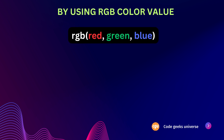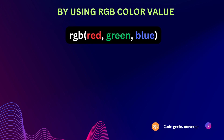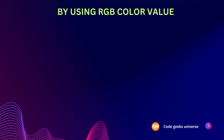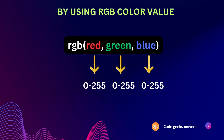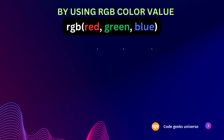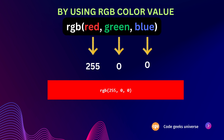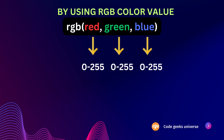In the RGB color model, each parameter — red, green, and blue — determines the intensity of the color on a scale from 0 to 255. For instance, an RGB value of 255, 0, 0 represents red because red is set to its maximum value of 255, while green and blue are both set to zero.